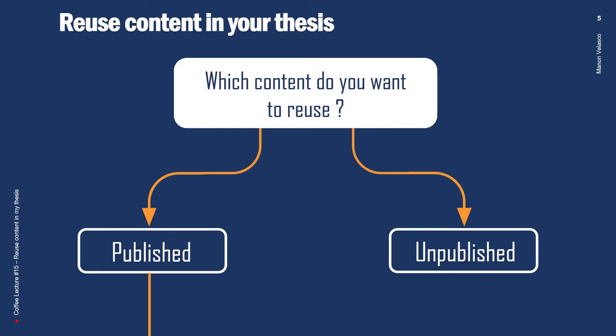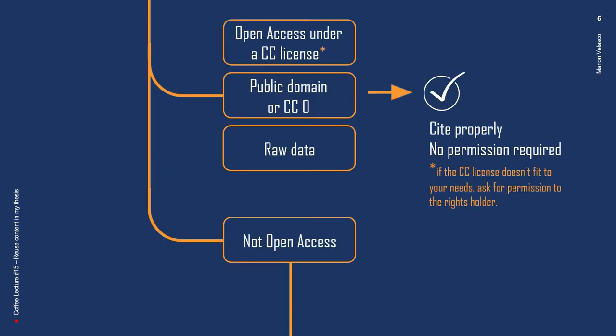We will now review the most common cases of reuse. Let's focus first on already published content. If you want to reuse open access content released under a Creative Commons license, CC0, or in the public domain: if the Creative Commons license fits your needs, no permission is required. If the CC license doesn't fit your needs, ask for permission from the rights holder.